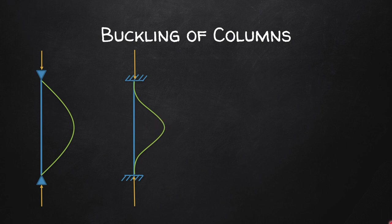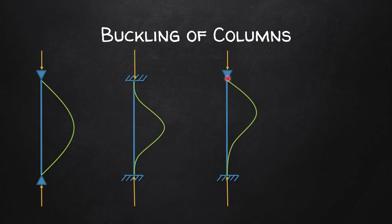The third case: the top is hinged and the bottom is fixed. Again, applying a compressive load, buckling occurs in this shape. At the top where there is a hinge support, slope is allowed. At the bottom, since there is a fixed support, slope is not allowed. You can see the slope forming a little further away, giving this kind of buckling configuration.